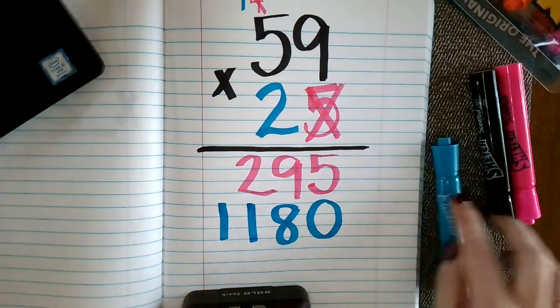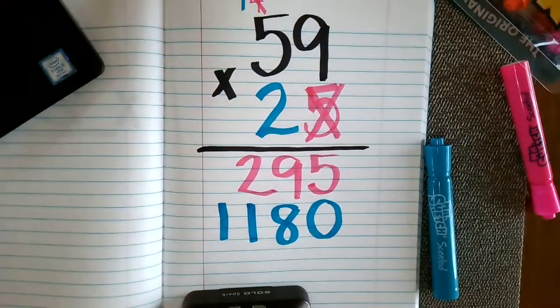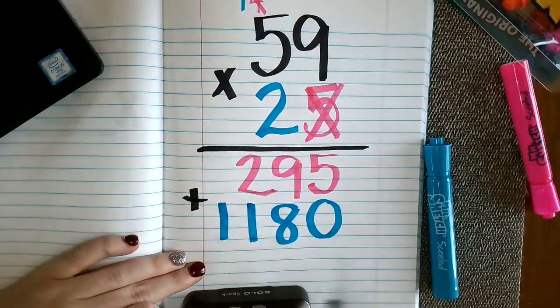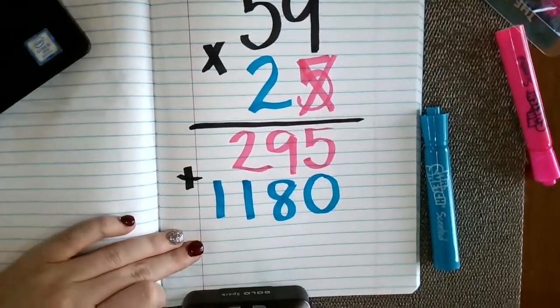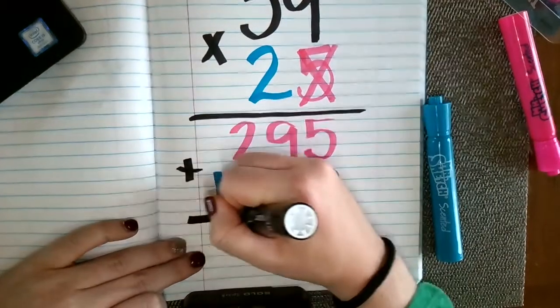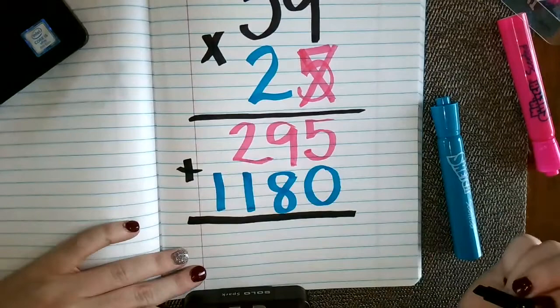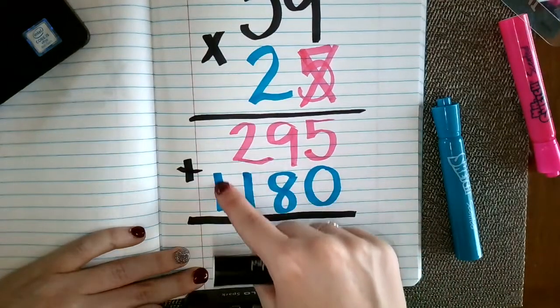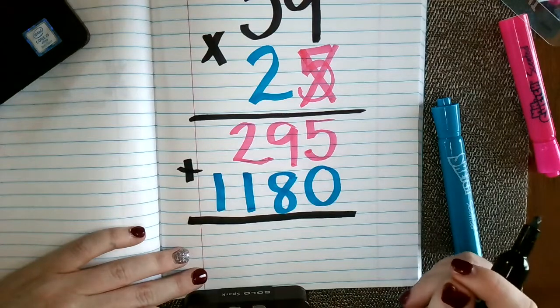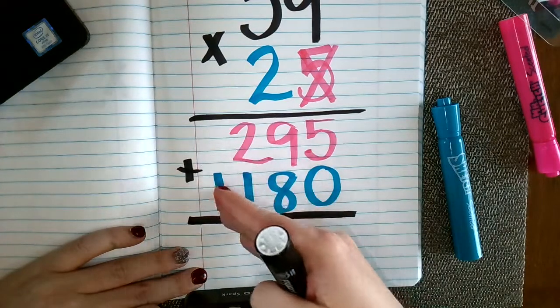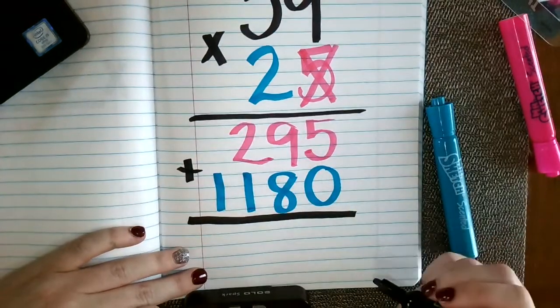So now we've done all of our multiplying that we need to. And the last part for standard algorithm is we need to find the sum of 295 and 1,180. So I'm going to add those numbers up. And it's very important that they line up. If they don't line up, it's easier to make a mistake that way. So we want to make sure that our ones place is lined up, our tens, our hundreds, our thousands. And then we can start to add.